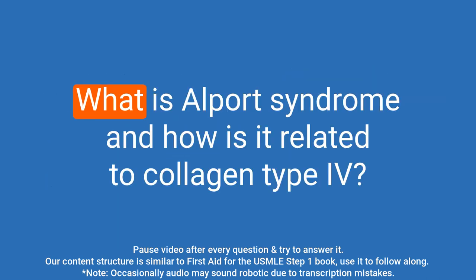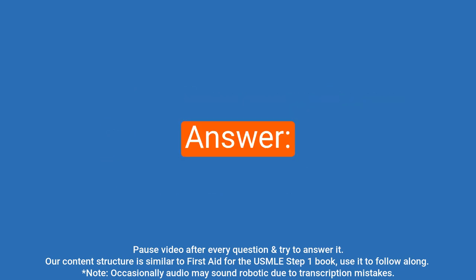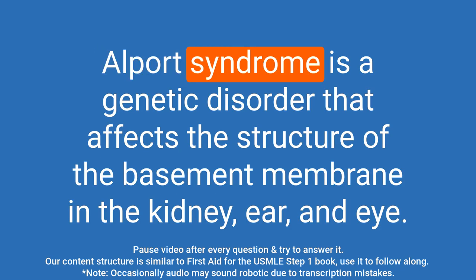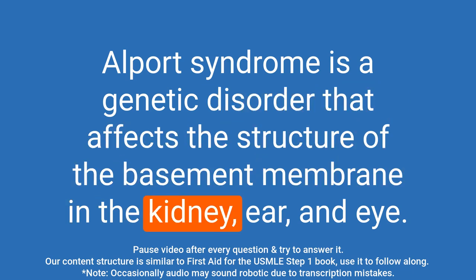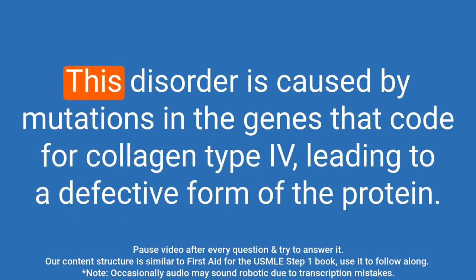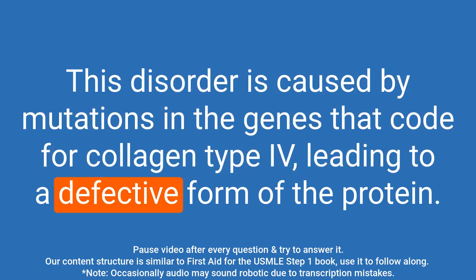Question: What is Alport syndrome and how is it related to collagen type IV? Answer: Alport syndrome is a genetic disorder that affects the structure of the basement membrane in the kidney, ear, and eye. This disorder is caused by mutations in the genes that code for collagen type IV, leading to a defective form of the protein.